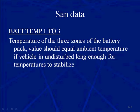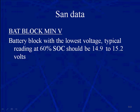What that means is that you have three of these PIDs: battery temp 1, battery temp 2, battery temp 3. That is just like reading battery temperature on a normal OBD2 car — ambient temperature, transmission temperature, engine temperature. Battery block min voltage: a typical reading at around 60% state of charge means you should be looking at 14.9 to 15.2 volts.